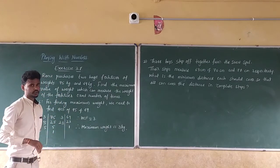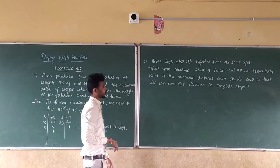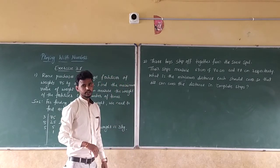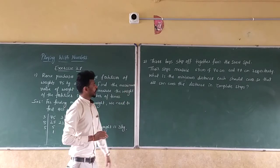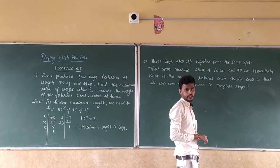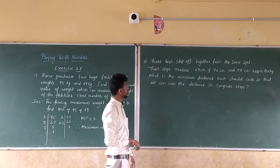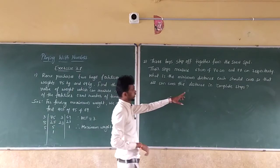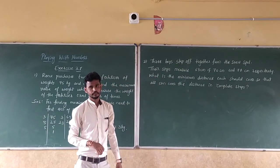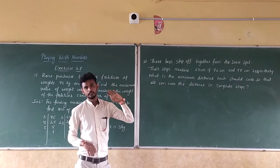If they ask maximum, we need to find HCF. Therefore, maximum weight is 15 kg. This is the solution of the first question of exercise 3.1. Now let us see the next question, second one. Three boys step off together from the same spot. Their steps measure 63 cm, 70 cm, and 77 cm respectively. What is the minimum distance each should cover so that all can cover the distance in complete steps? For finding minimum distance, we need to find LCM.